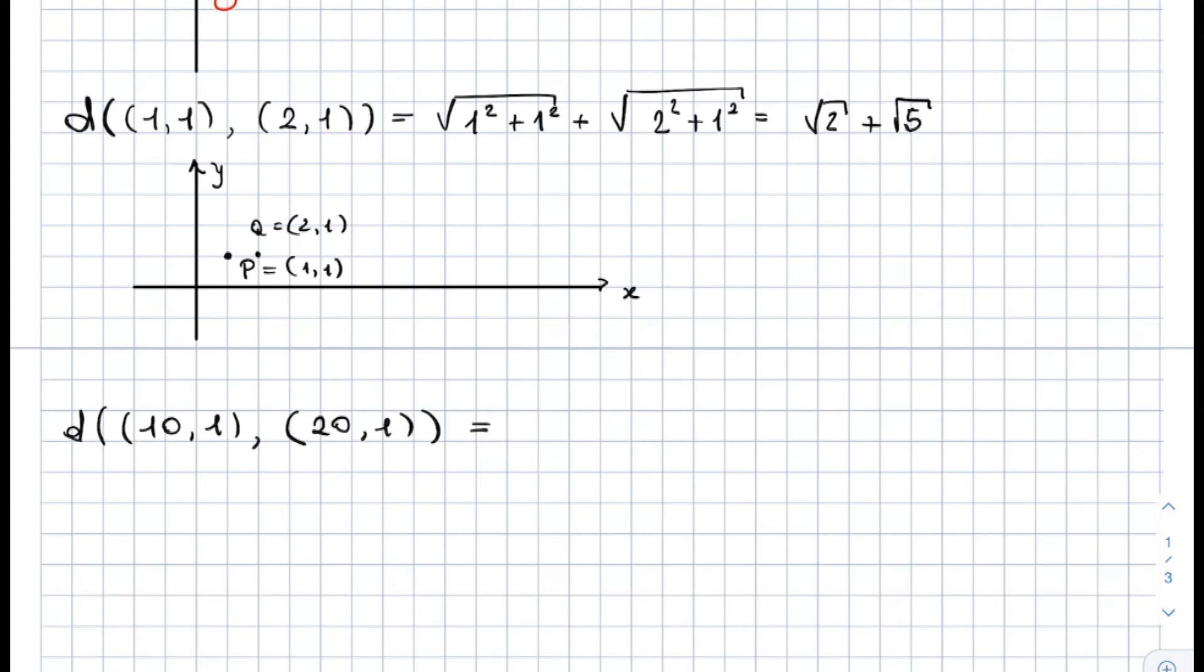once again using the formula, this will be the square root of (10 squared plus 1 squared), plus the square root of (20 squared plus 1 squared), and this is the square root of 101, plus the square root of 401. This number can be explicitly computed, but you can see that it's bigger than 10 plus 20. So this number here is bigger than 30.